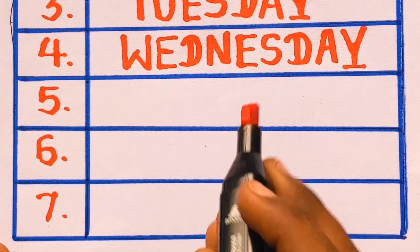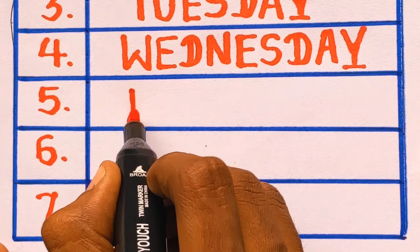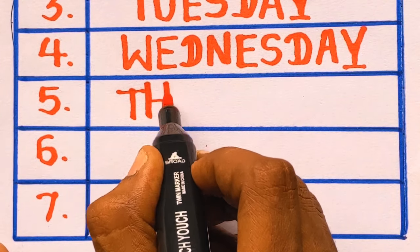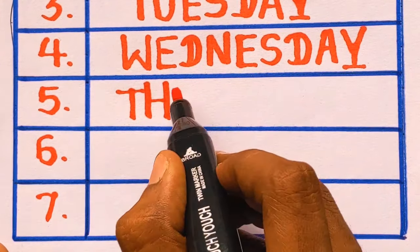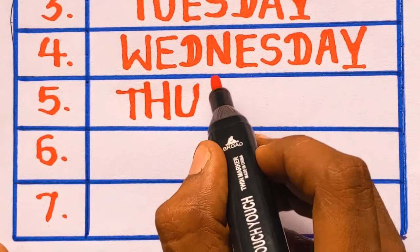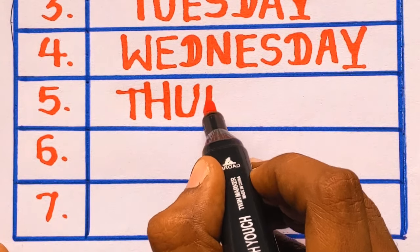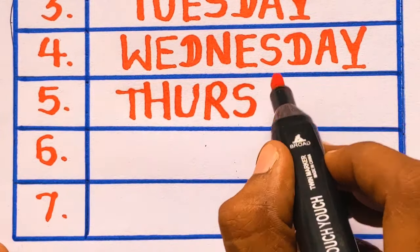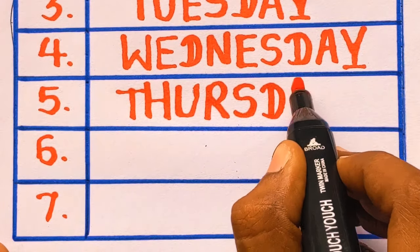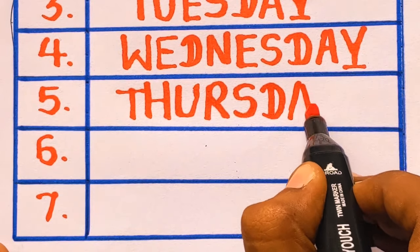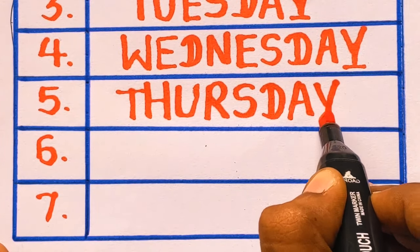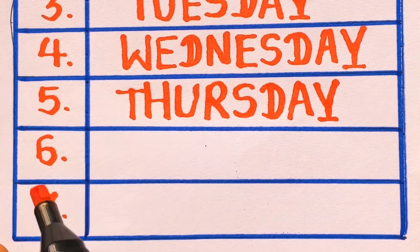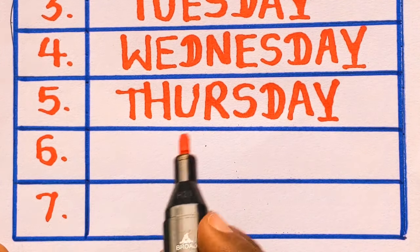Next is number 5, Thursday. T, H, U, R, S, D, A, Y. Thursday.